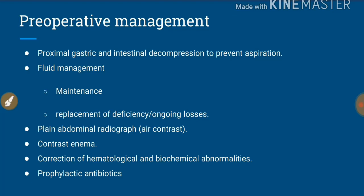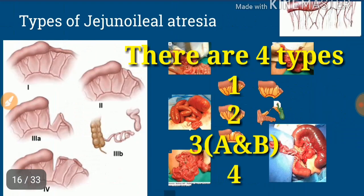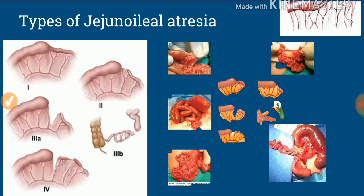Prophylactic antibiotics are also given in cases of ileal atresia. Now, before we go into the abdomen, we have to know what we are going to expect inside. For this we need to know the different types of jejuno-ileal atresia. The Bland-Sutton classification, with a small modification, gives us the classification of the different types of atresia.